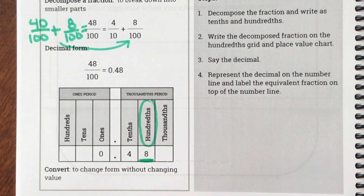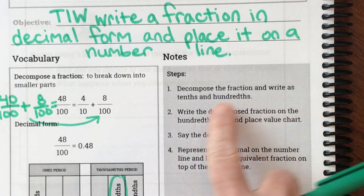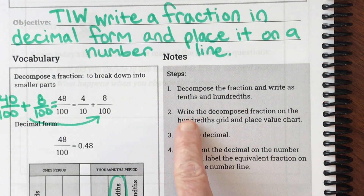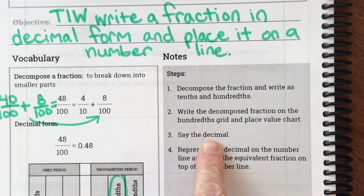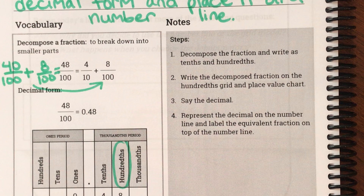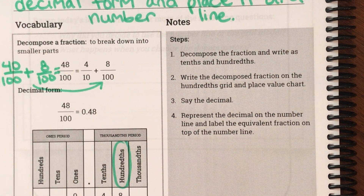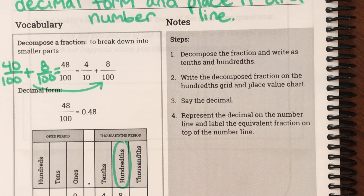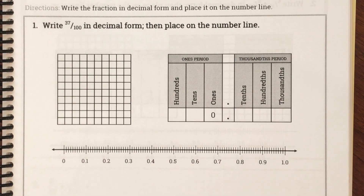Let's look at our steps today. First, we decompose the fraction and write it as tenths and hundredths. Then we write the decomposed fraction on the hundredths grid and place value chart. Next, we say the decimal — and the neat thing is it's going to sound exactly like it did as a fraction: forty-eight hundredths and forty-eight hundredths sound exactly the same. Finally, we represent the decimal on the number line and label the equivalent fraction on top.